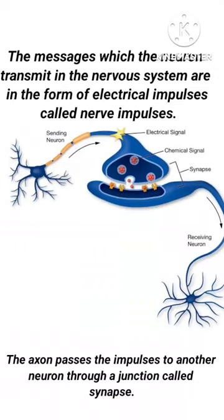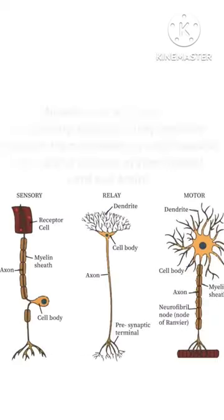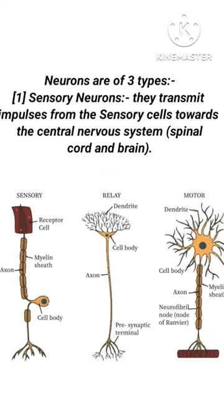The messages which the neurons transmit in the nervous system are in the form of electrical impulses called nerve impulses. The axon passes the impulses to another neuron through a junction called synapse.